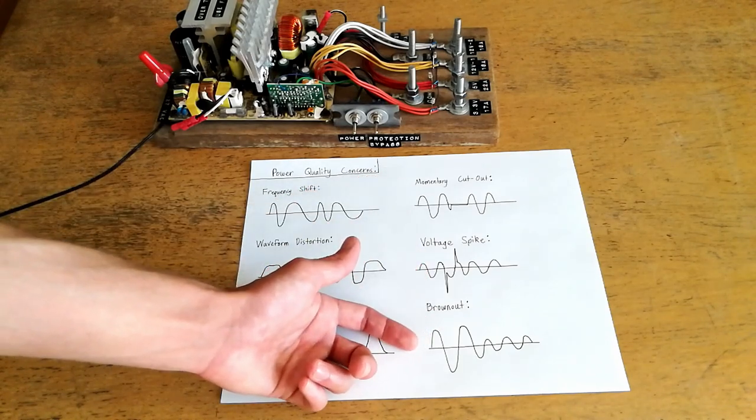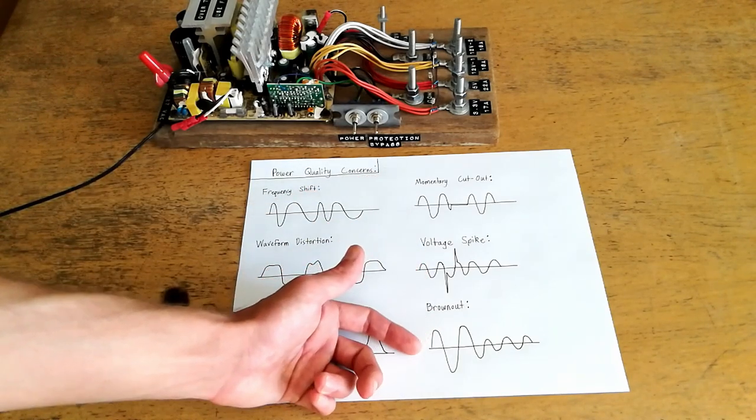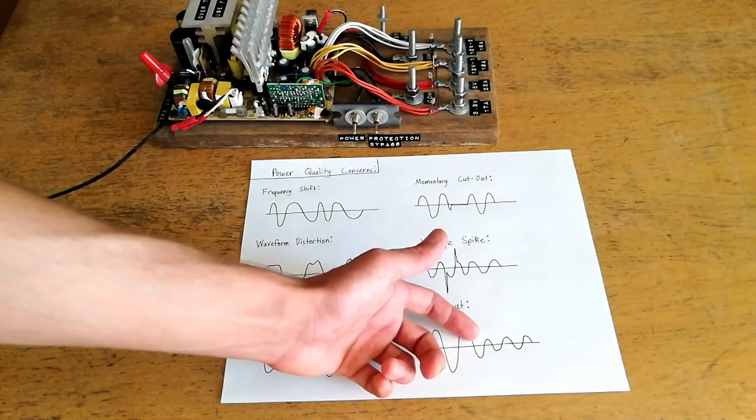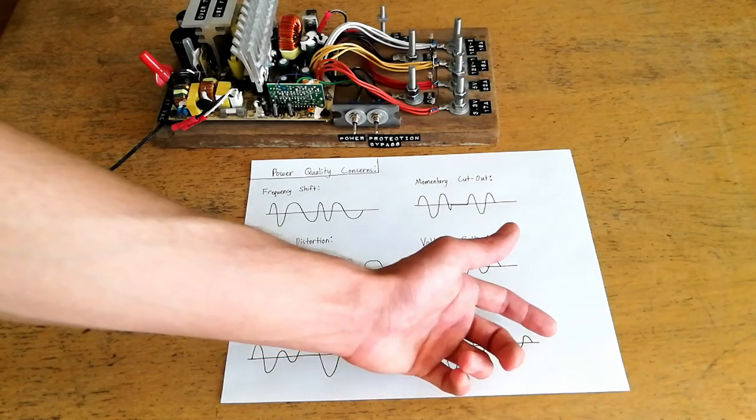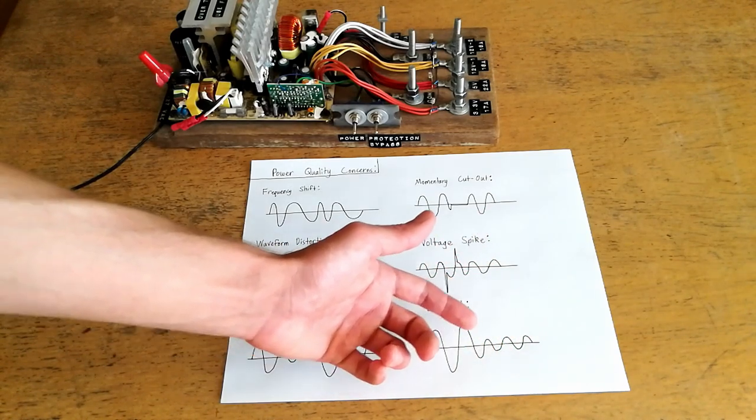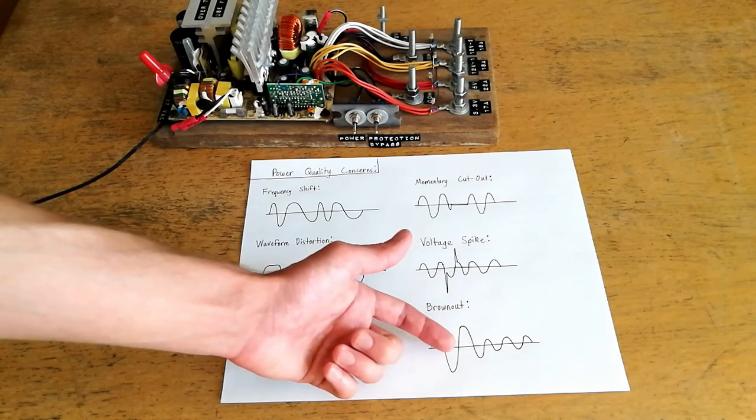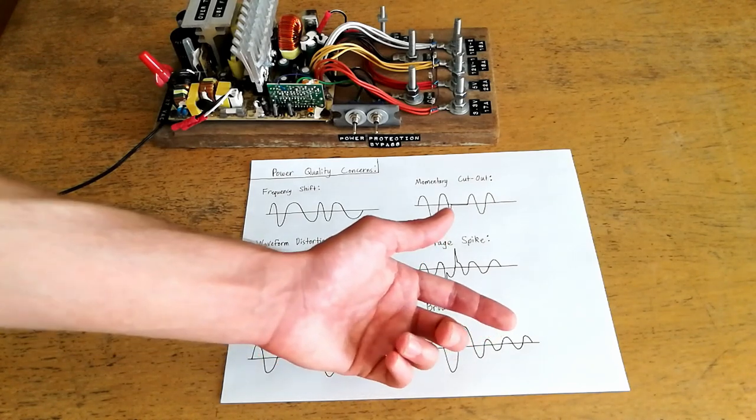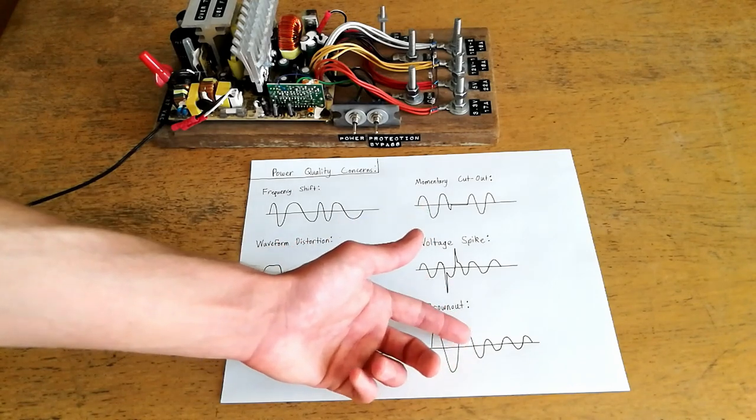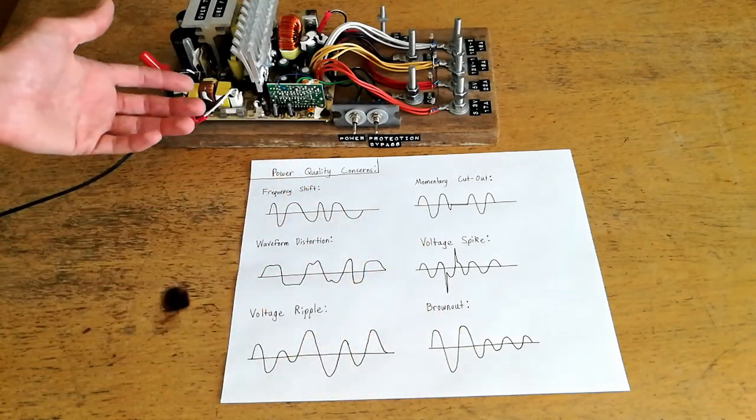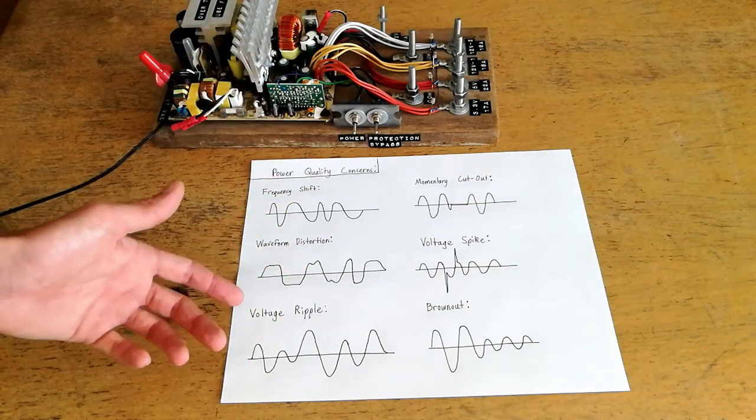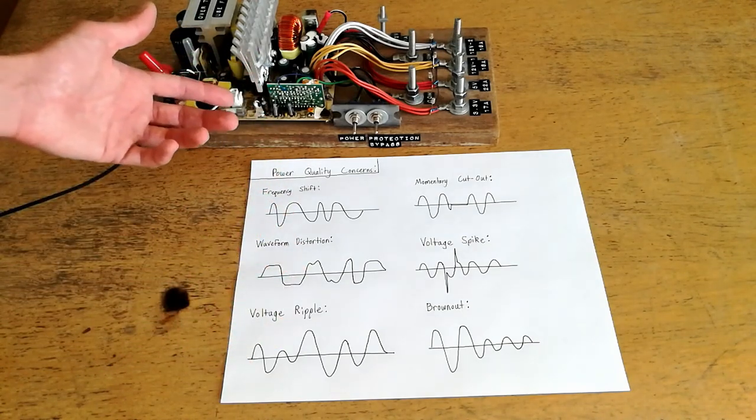And the last type of power quality issue that I'll go into today is brownout which is basically a condition where the normal operating voltage decreases substantially. This can lead to erratic behavior, occasional overheating in motors, and can lead to electronics to intermittently turn off or potentially even cause hard disk crashes. But we'll go into that when we start talking about how power supplies work as well as which ones of these are most problematic for switched mode power supplies.